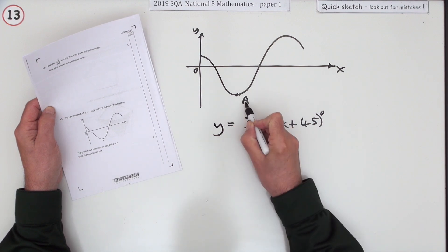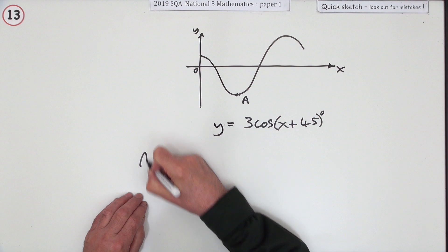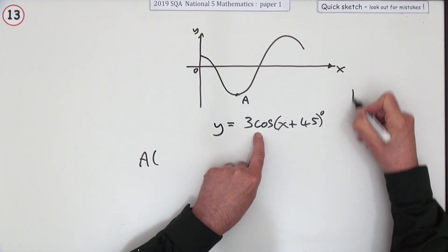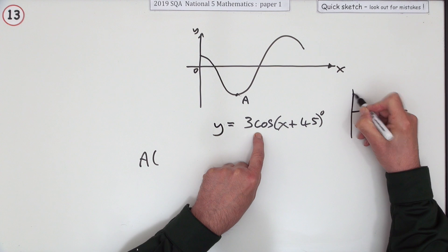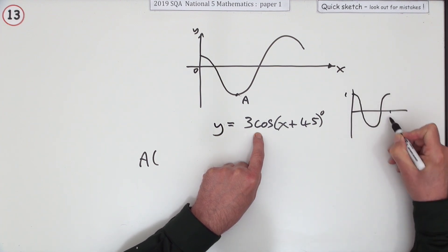Well, the normal cosine graph should start at the top, start at 1, go down and come back up by 360 degrees.